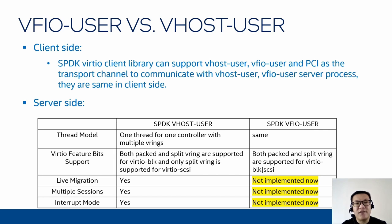Looking from the server side, the thread model is the same for VHOST user and VFR user. For VHOST feature support, currently VHOST SCSI cannot support the packed ring — this is one difference. Both packed ring and split ring are supported for VHOST block in the VFR user solution and in the VHOST solution. For the live migration part, multi-sensing and interrupt mode features are only supported in the VHOST user solution now. These features are in the development plan for VFR user.